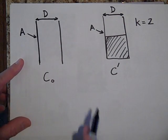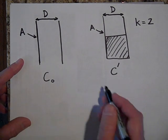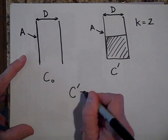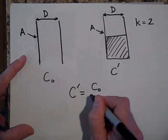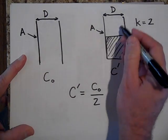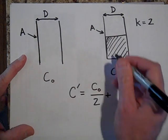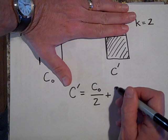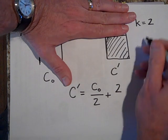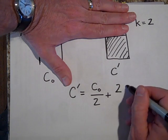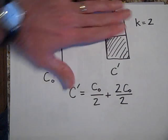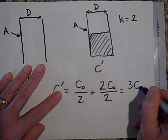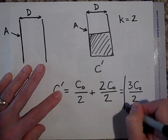And so what we really have, if you want to know how c prime relates to c naught, it's going to be half of c naught. That takes care of this part. Plus, for this part, you again you have only half of the area, but you have a dielectric that's 2 there, so I'm going to put a 2 c naught over 2. So that looks like it's 3 halves, 3 c naught over 2. And there you are.